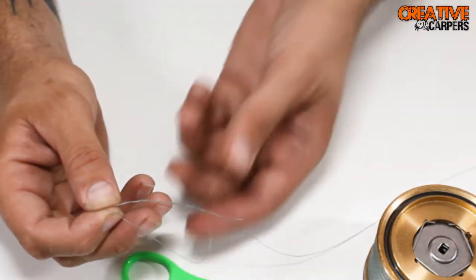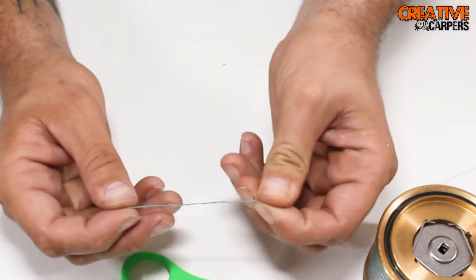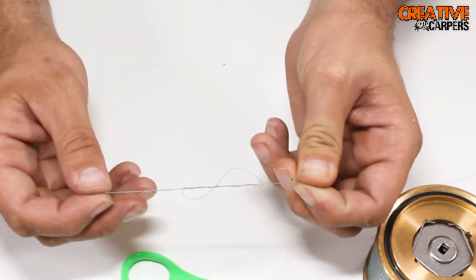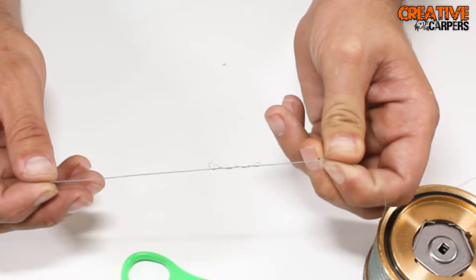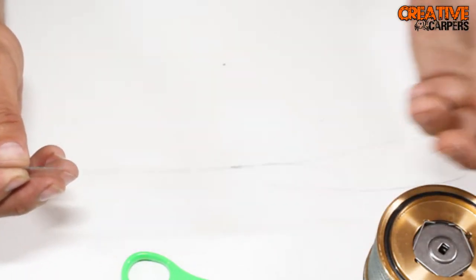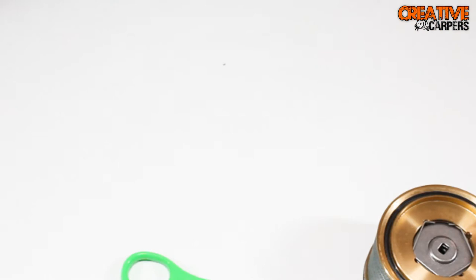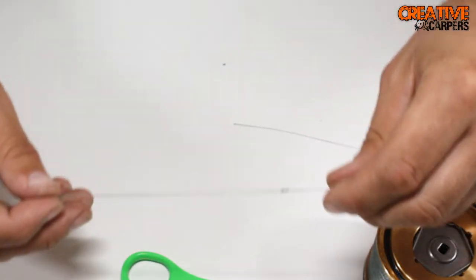Now you're left with a tag end and the main line. Take them both and clamp them in your fingers, then slowly pull it down. When it gets to about that point, I like to moisten it.